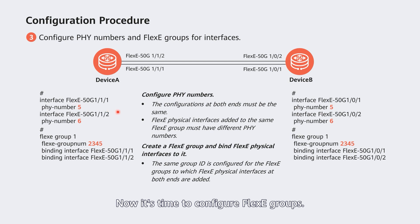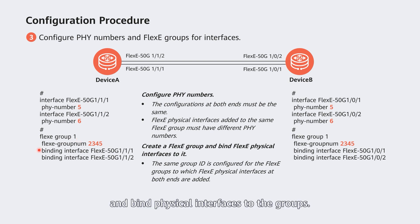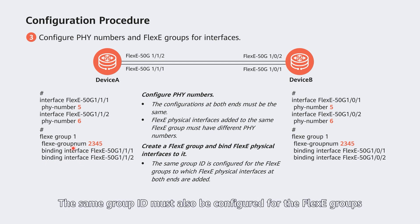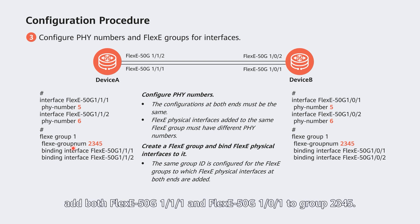Now configure flexi groups. Set group IDs to differentiate flexi groups and bind physical interfaces to the groups. The same group ID must also be configured for the flexi groups to which the interconnected flexi physical interfaces at both ends are added. For example, add both flexi-50G-1/1/1 and flexi-50G-1/0/1 to group 2345.